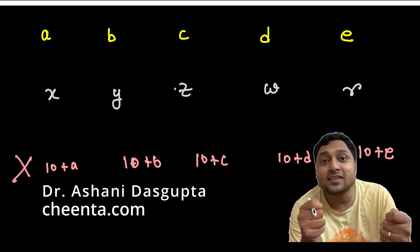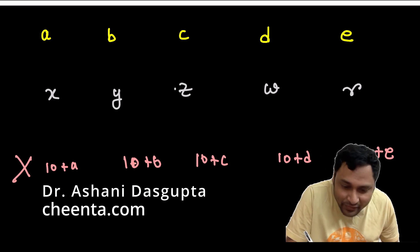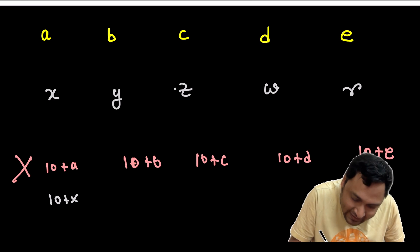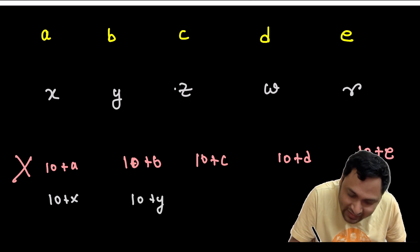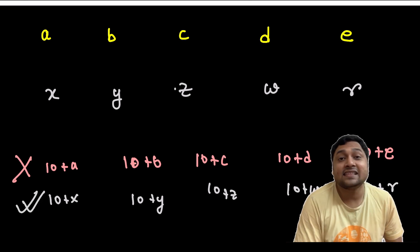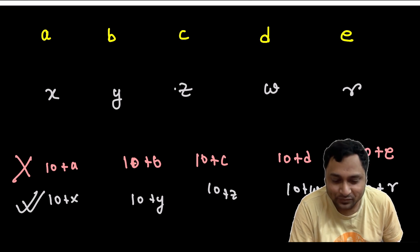Then, which are the numbers that we can choose? Well, we can choose 10 plus X, 10 plus Y, 10 plus Z, 10 plus W and 10 plus R. These are the numbers that we can choose.